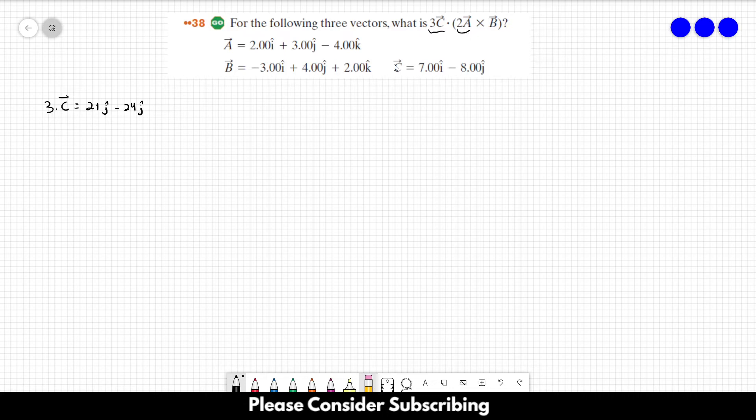Now let us do 2 times A. So 2 times A is equal to 4 in the I direction plus 6 in the J direction minus 8 in the K direction.